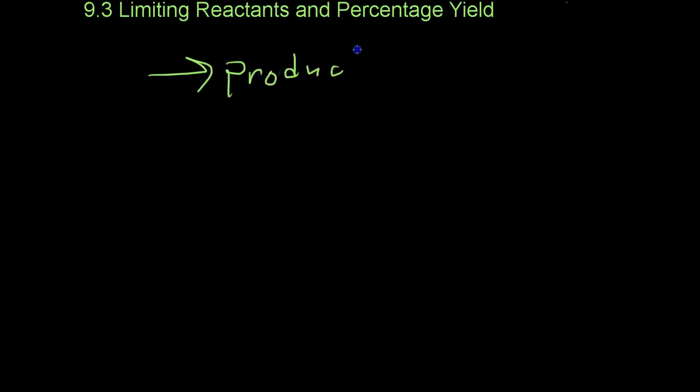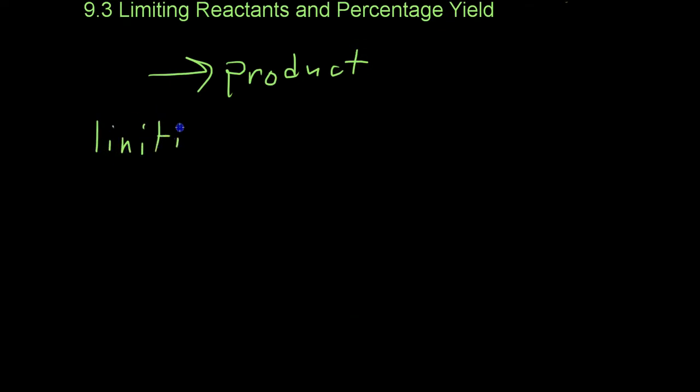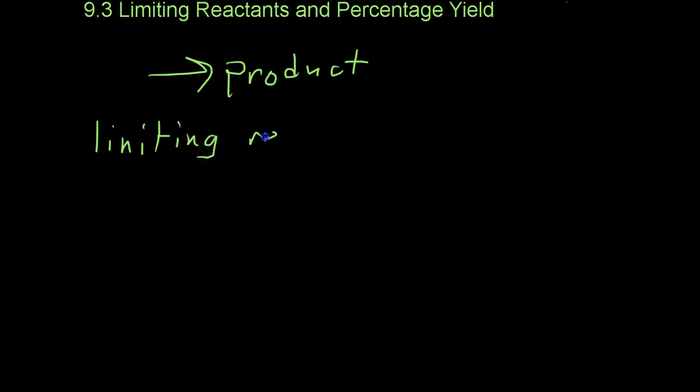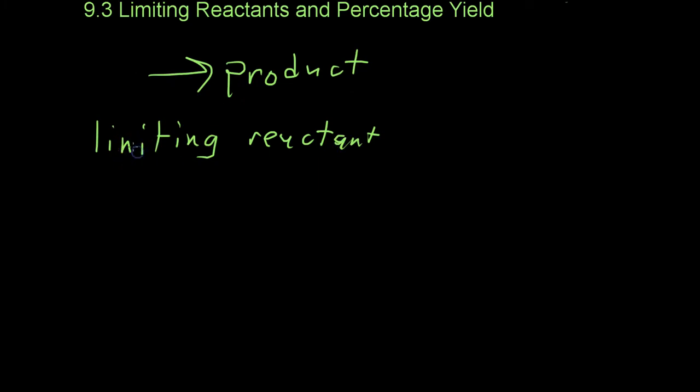There's always going to be one reactant that limits the reaction, known as the limiting reactant. This is the one that has less than the ideal amount of reactants going into the chemical reaction for optimal production.